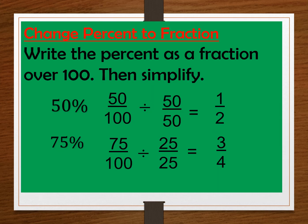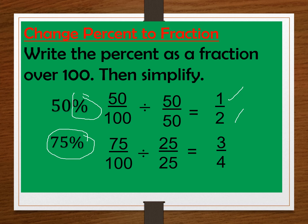To change percent to fraction: write the percent as a fraction over 100, then simplify your answer. So we have 50%. Remove the percent sign and divide by 100. The common factor for 50 and 100 is 50. So 50 divided by 50 is 1, and 100 divided by 50 is 2. Now we have 75%. 75 over 100 — the common factor for 75 and 100 is 25. So 75 divided by 25 is 3, and 100 divided by 25 is 4.